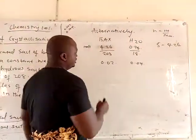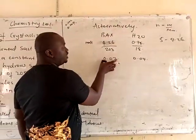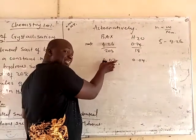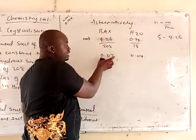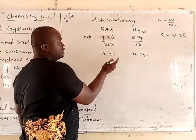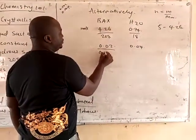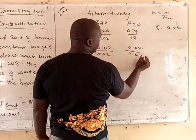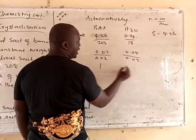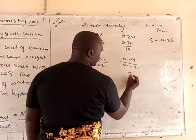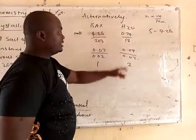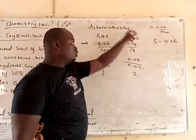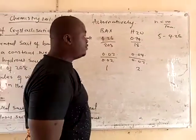Using the mole ratio, divide by the smallest value. Dividing 0.02 by 0.02 gives 1, and dividing 0.041 by 0.02 gives approximately 2. So the ratio of salt to water is 1:2, confirming there are 2 molecules of water of crystallization — the same answer as before.